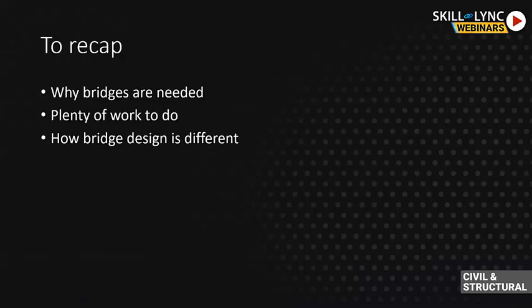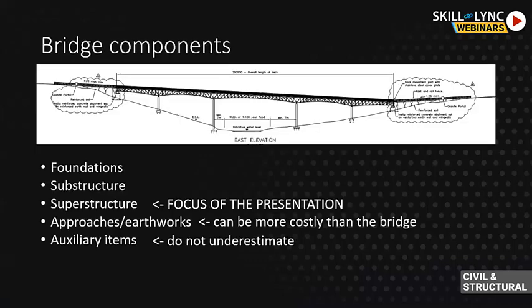To recap: we spoke about why bridges are needed, established that there's plenty of work in the industry, and talked about how bridge design is different from a typical building. So let's talk about what bridges are made of. First of all, you need foundations — typically pad foundations or piles. You have the substructure, which includes piers and abutments. You have the superstructure, which is mostly the focus of this presentation. And it must not be underestimated how much other items play into bridge design.